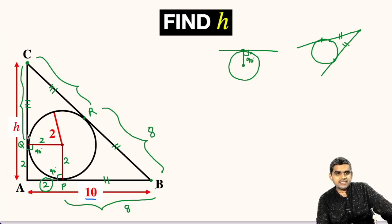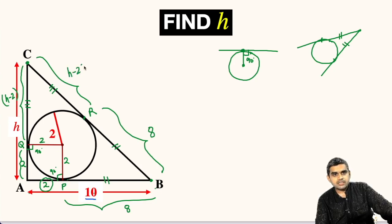This distance CQ will be H minus 2 because H is this entire length CA and 2 is the distance between points Q and A. So, the remaining distance CQ will be H minus 2. So, this length will also be H minus 2.